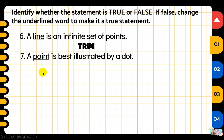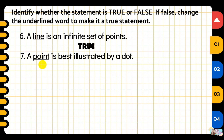Number seven: a point is best illustrated by a dot. The underlined word is 'point.' Is this true or false? The answer is true.